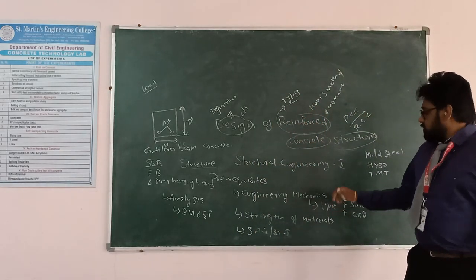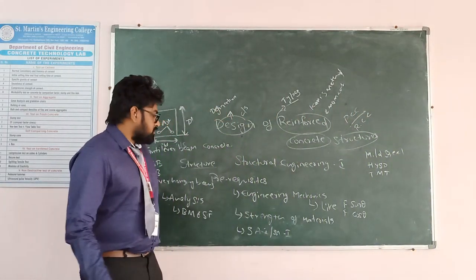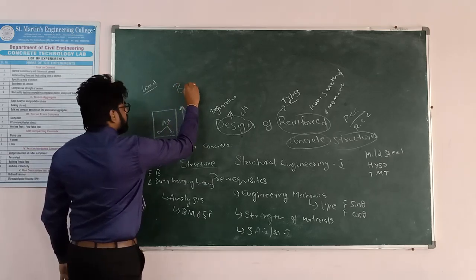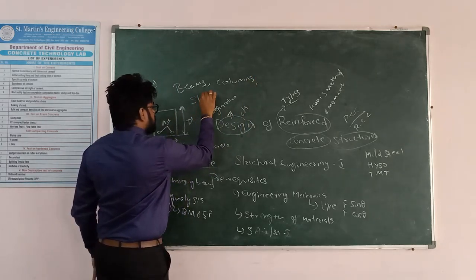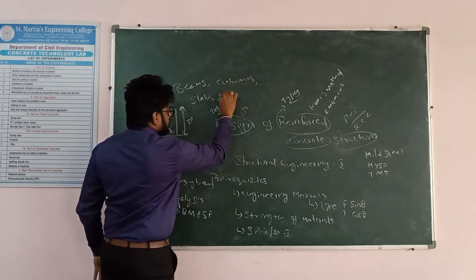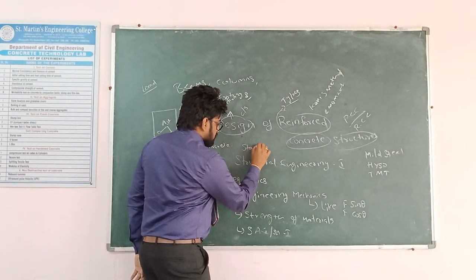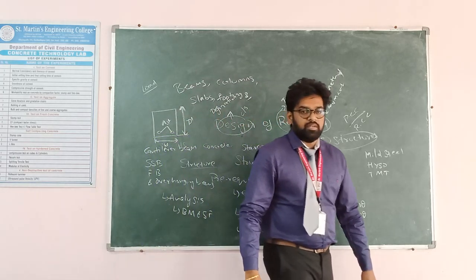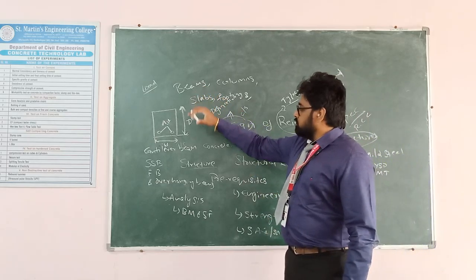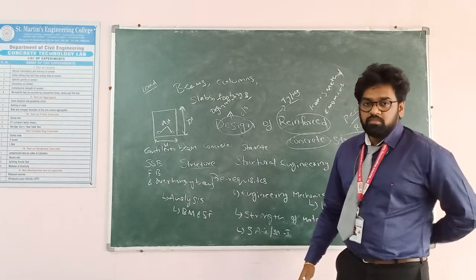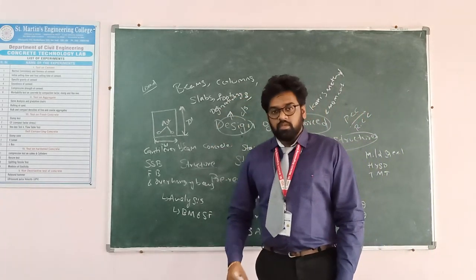In RCC we deal with different structural elements: beams, columns, slabs, footings, and stairs. For beams there are two types — singly reinforced beams and doubly reinforced beams. For columns there are long columns and short columns.